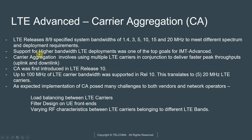One way of doing that is by using carrier aggregation. Carrier aggregation involves using multiple LTE carriers in conjunction to deliver faster peak throughputs, both in the uplink and downlink. You can have two flavors of CA: uplink CA or downlink CA. Carrier aggregation was first introduced in LTE Release 10, and up to 100 MHz of LTE carrier bandwidth was supported, which translates to a maximum of five 20 MHz LTE carriers.